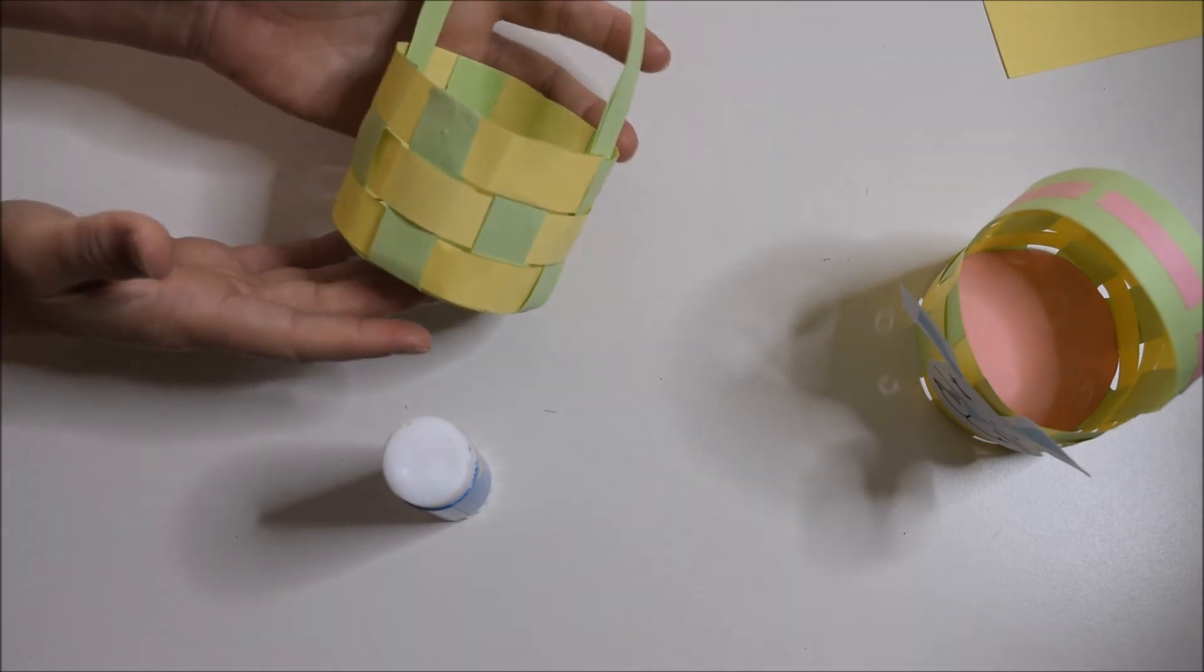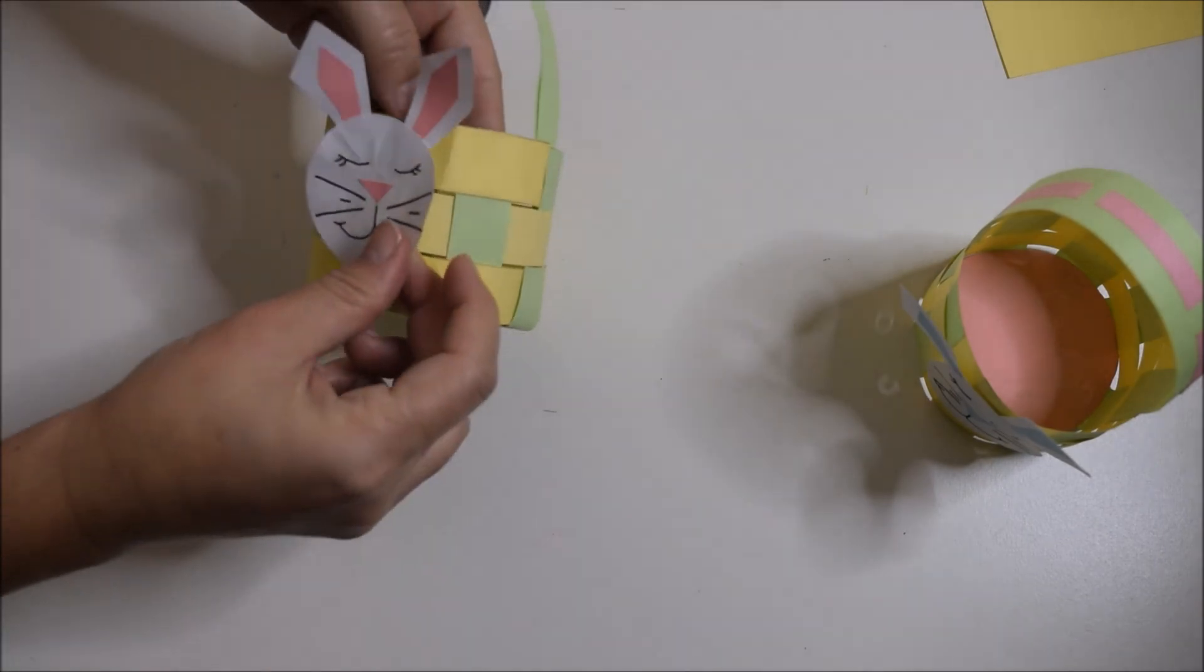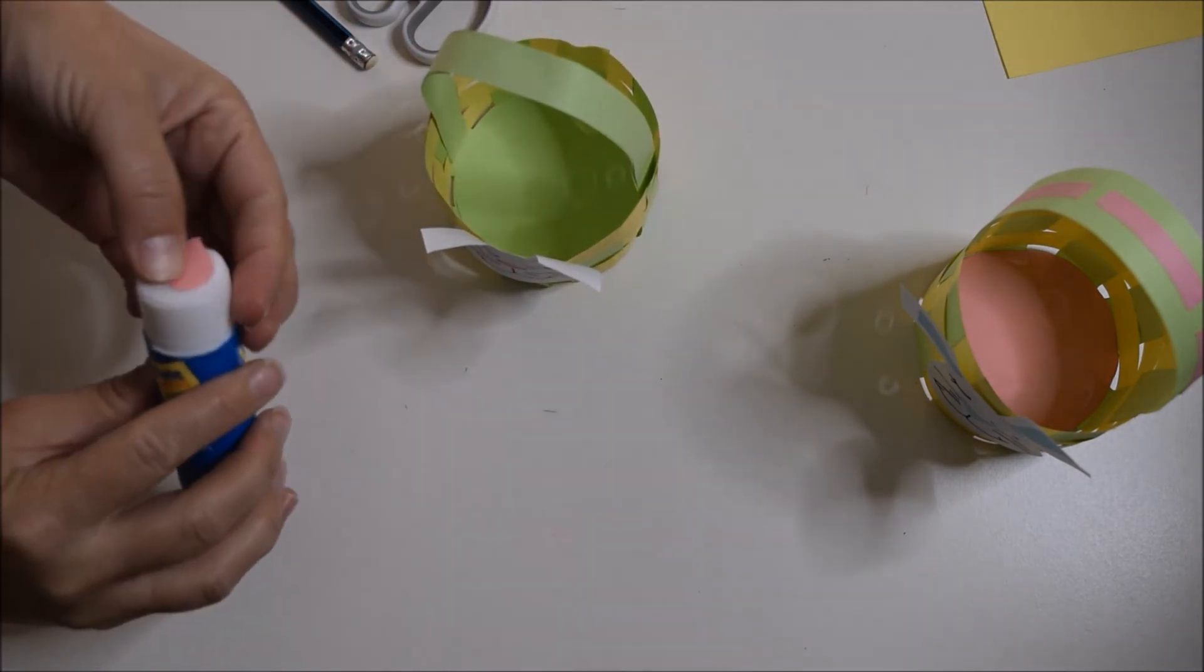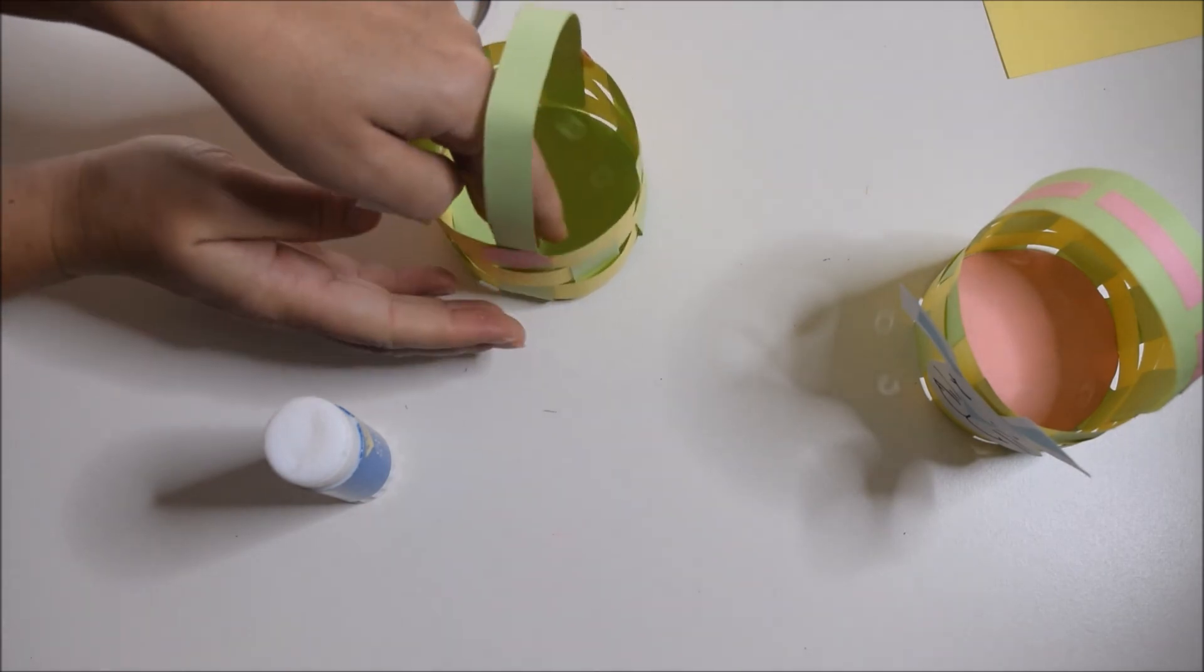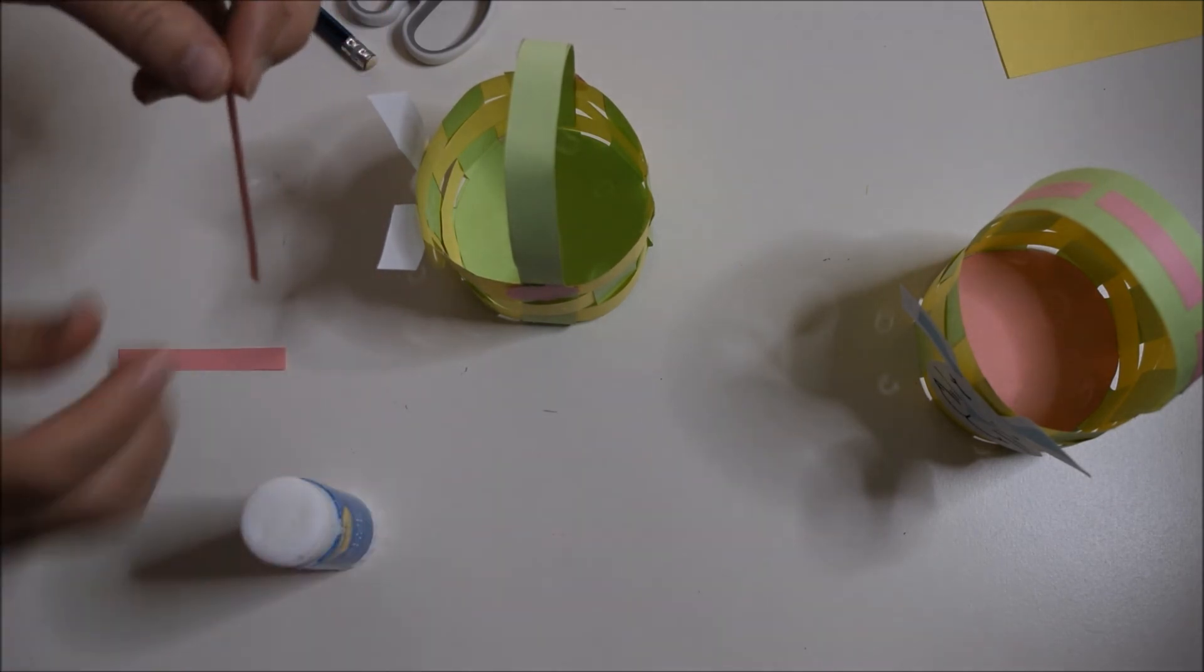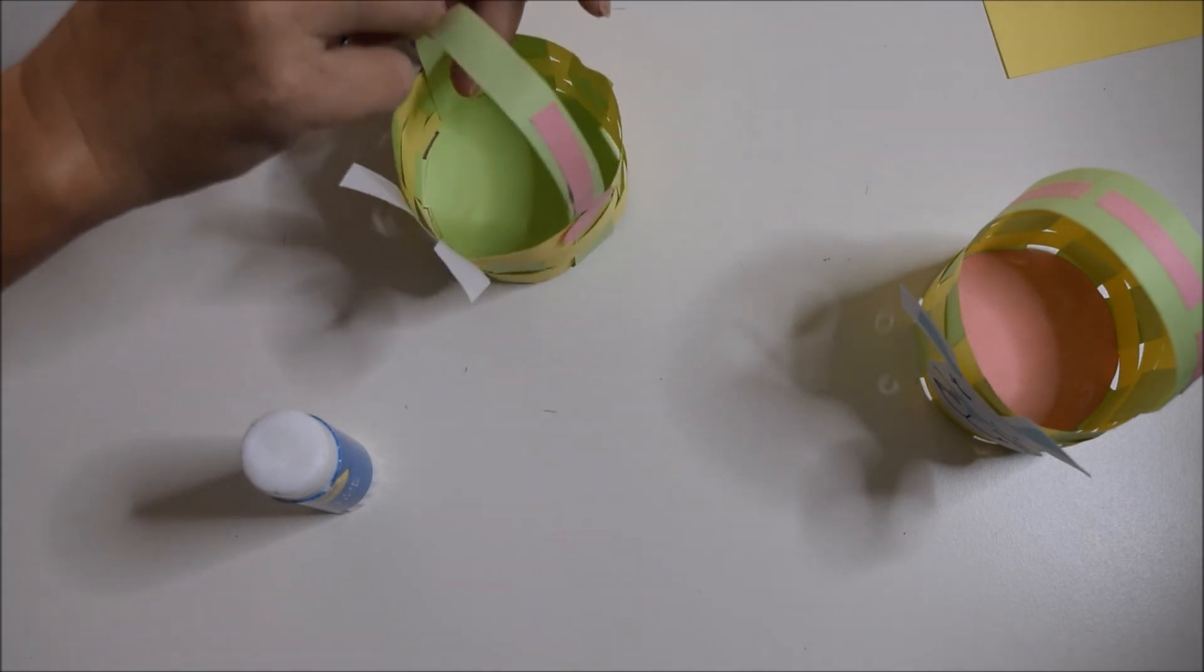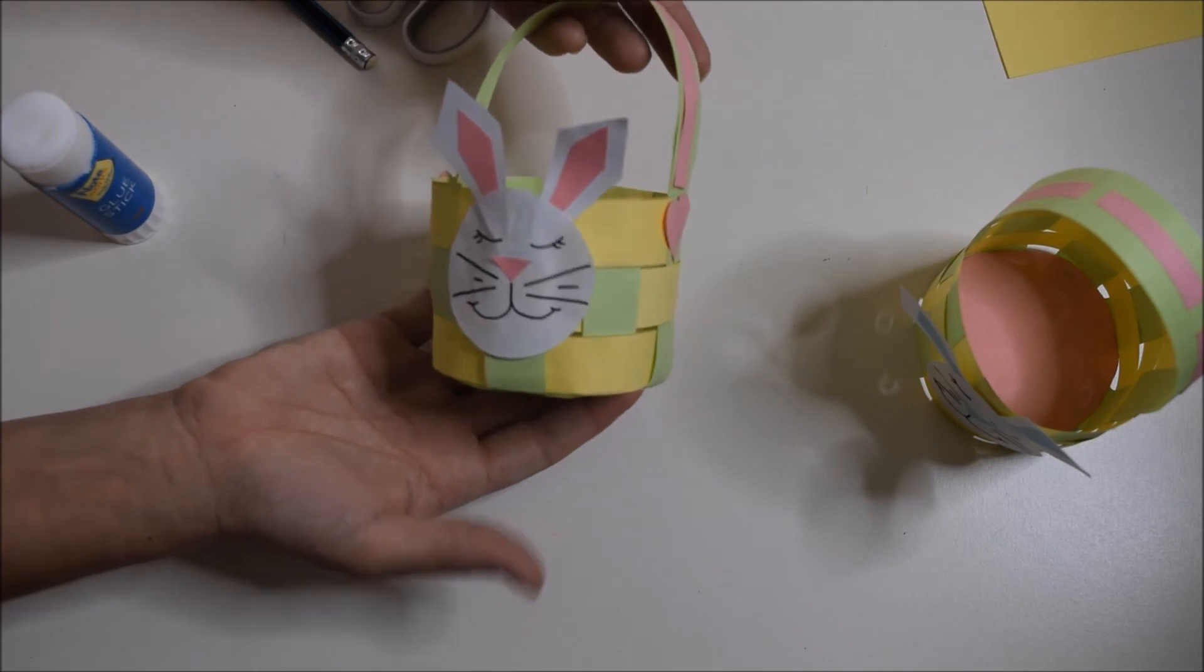There we go. Now the bunny basket is all put together, so I'm just going to add a few little details to mine. Now I'm using my bunny face that I used in a previous video. A couple of little heart cutouts that I have done, put those on the sides, some little pink strips for my handle.